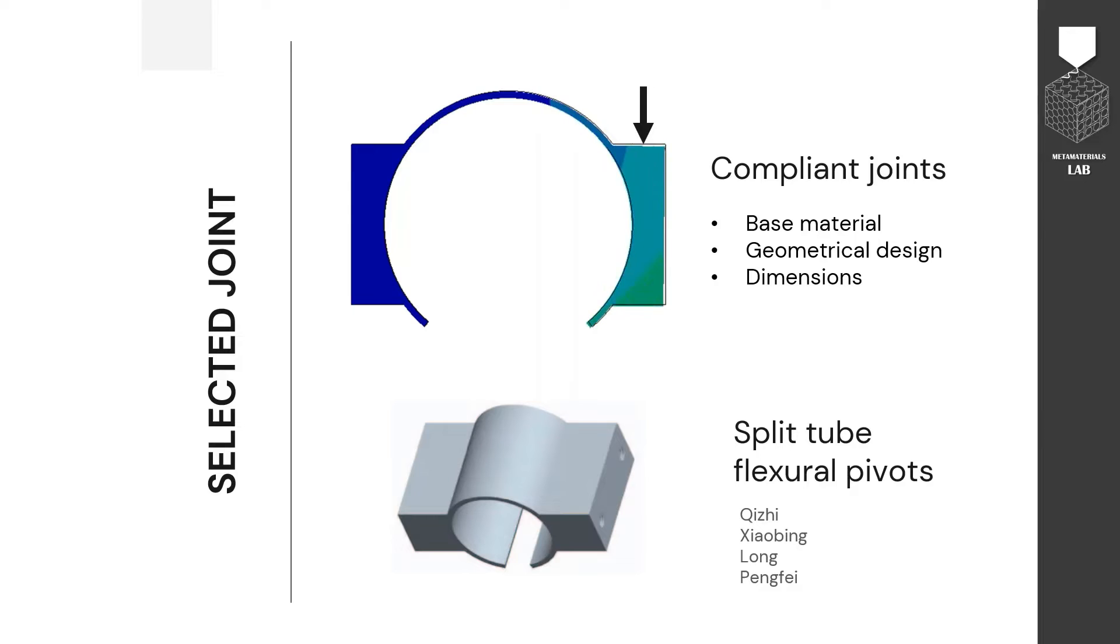I selected the split-tube flexural pivots joint, in which it is expected that the largest deformation occurs at the ring section once a force is applied.